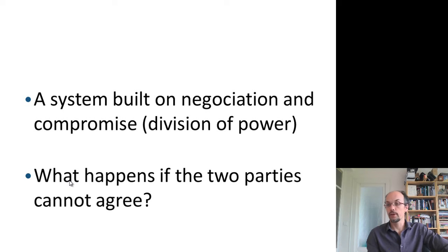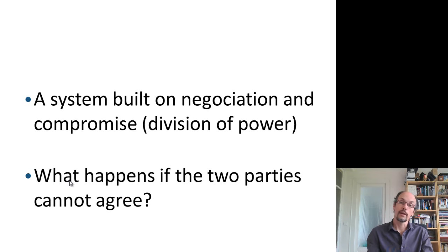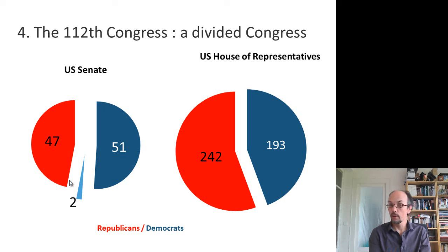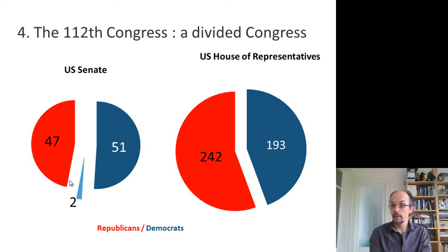The question we can ask ourselves is: it is meant to work thanks to compromise, but what if there is no compromise? This is the situation right now. We have a divided Congress — Democrats have a small majority in the Senate, and they might lose this majority in 2014, while Republicans have a comfortable majority in the House of Representatives.